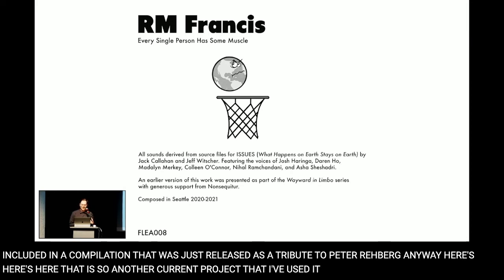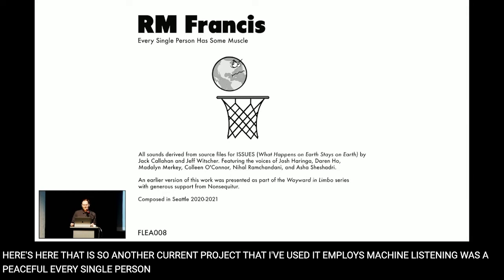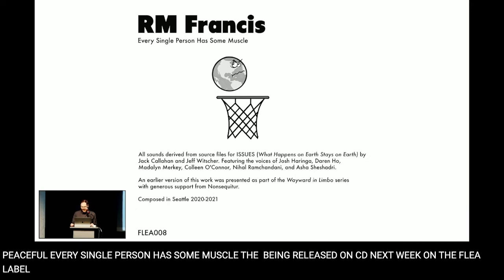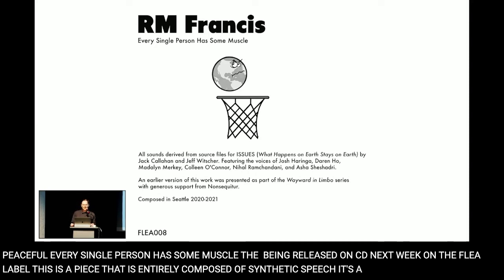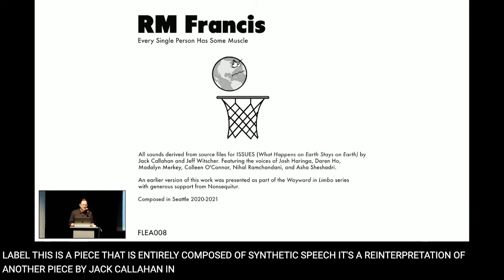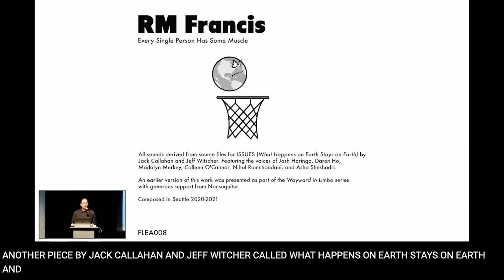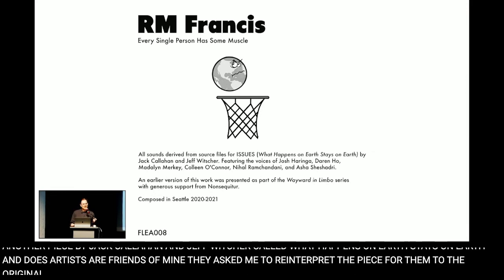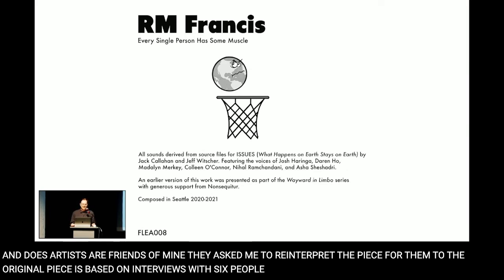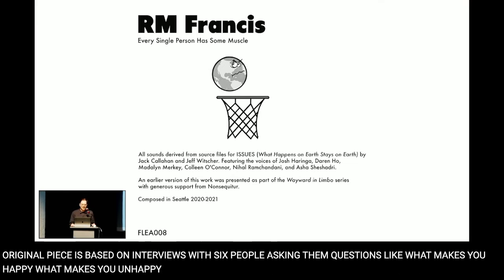The piece that employs machine listening is called 'Every Single Person Has Some Muscle.' It's being released on CD next week on the Flea label. This is a piece entirely composed of synthetic speech — a reinterpretation of another piece by Jack Callahan and Jeff Witcher called 'What Happens on Earth Stays on Earth.' Those artists are friends of mine who asked me to reinterpret their piece. The original piece is based on interviews with six people, asking them questions like what makes you happy, what makes you unhappy, and to share a favorite story from their childhood.